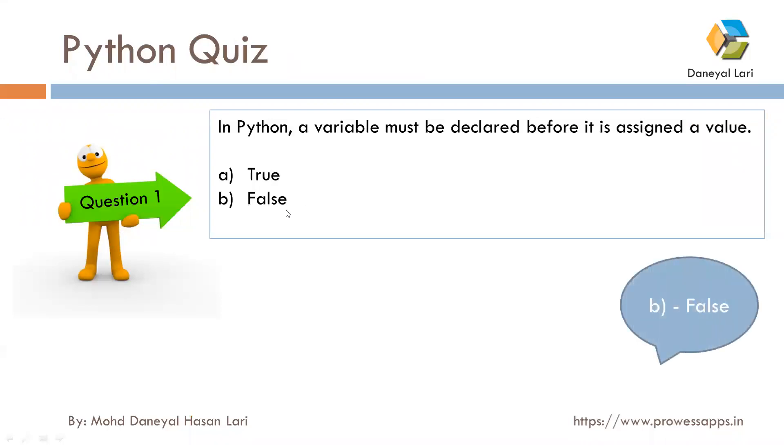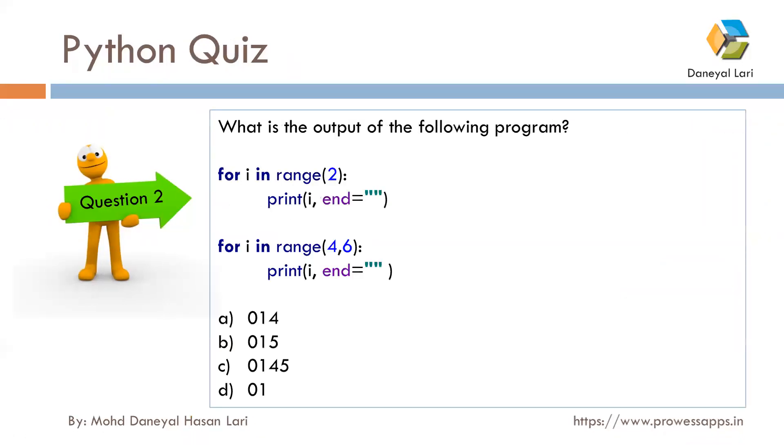The second question was: what is the output of the following program? This question contains a range function. It will generate a range from 0 to 1 because the 2 will be excluded. It will print all the values of the range, so 0 and 1 will be printed without changing the line because we have updated the end parameter. Another range is calculated from 4 to 6, so it will include only 4 and 5. The correct answer is option C, that is 0145.